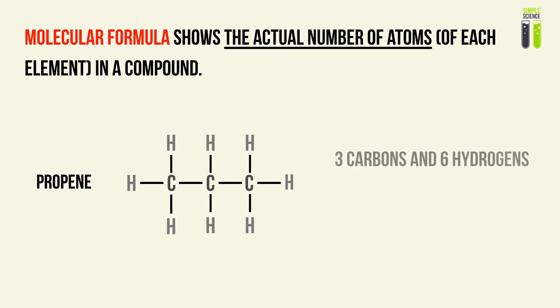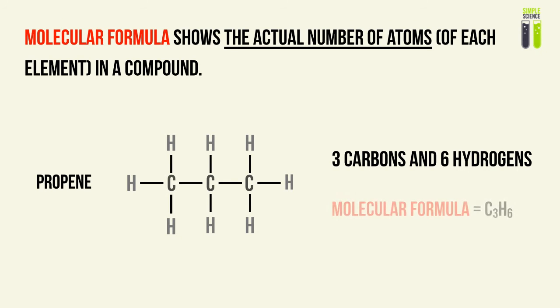For this example, let's use propene. It is basically a hydrocarbon that has three carbons and six hydrogens within the molecule. So therefore, the molecular formula would show the actual number of atoms inside the molecule, so that would be C3H6.